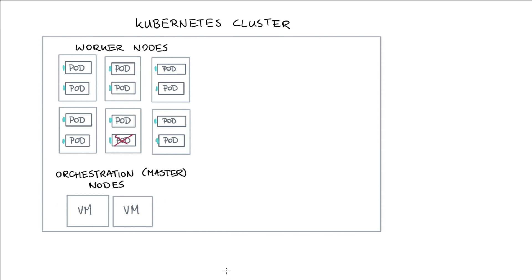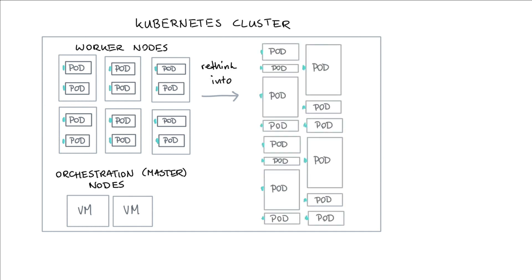The master nodes are in charge of making sure worker nodes are doing what they're supposed to do. Should a pod go down, it will be these nodes that detect something has happened and are tasked with redeploying the broken pod. These master nodes allow us to rethink what compute looks like — in practice, you won't be thinking in terms of servers or worker nodes. Instead, you'll rethink resources in terms of pods. When interacting with Kubernetes, you typically interact with pods rather than separate virtual machines.